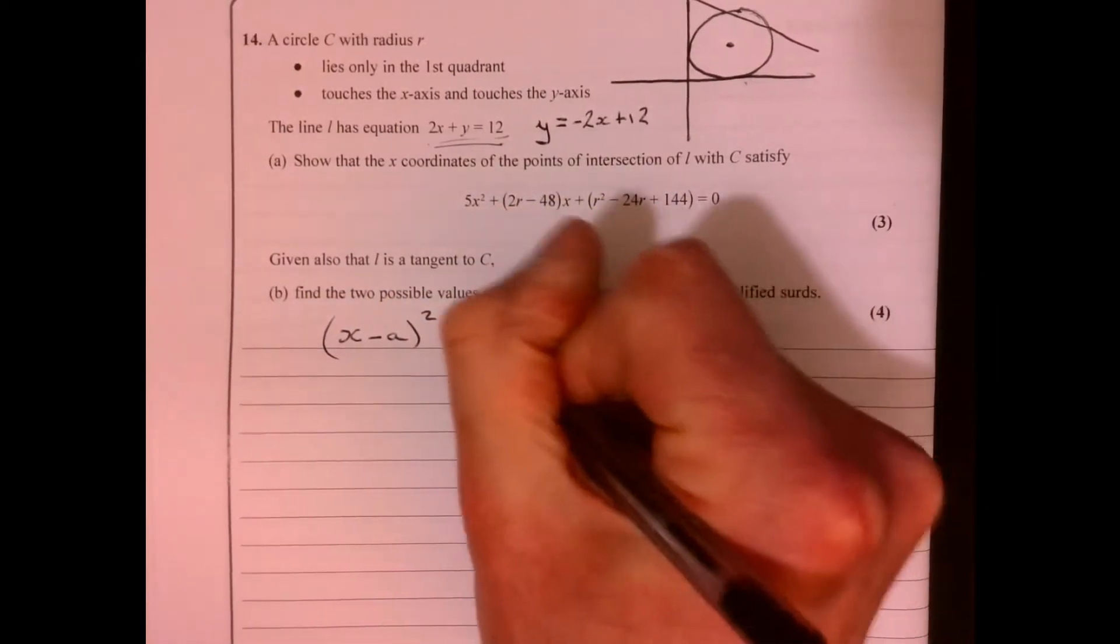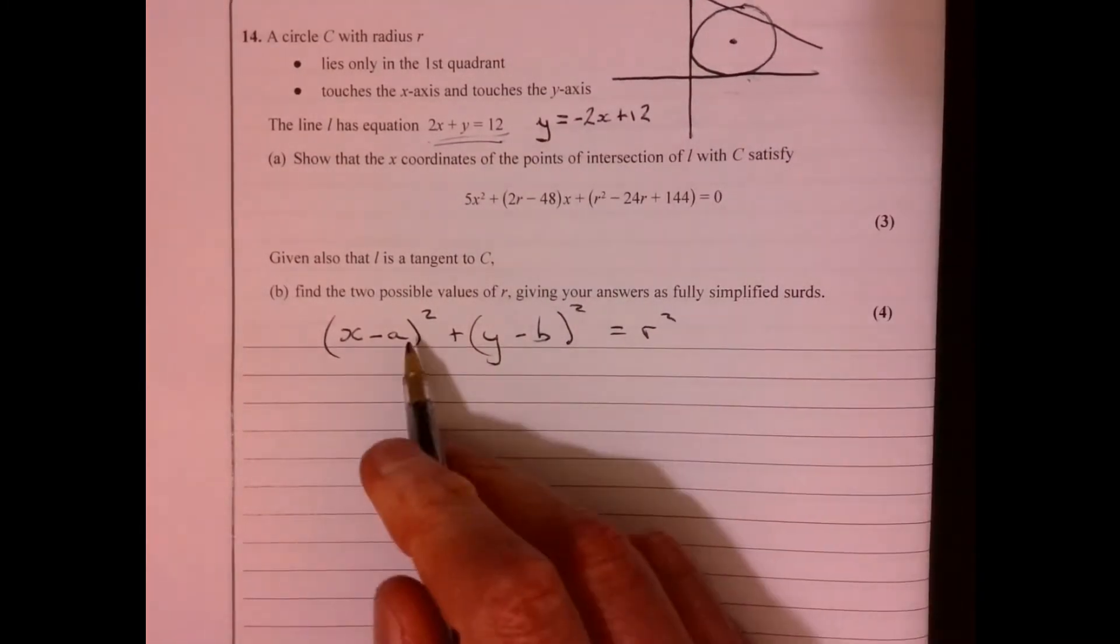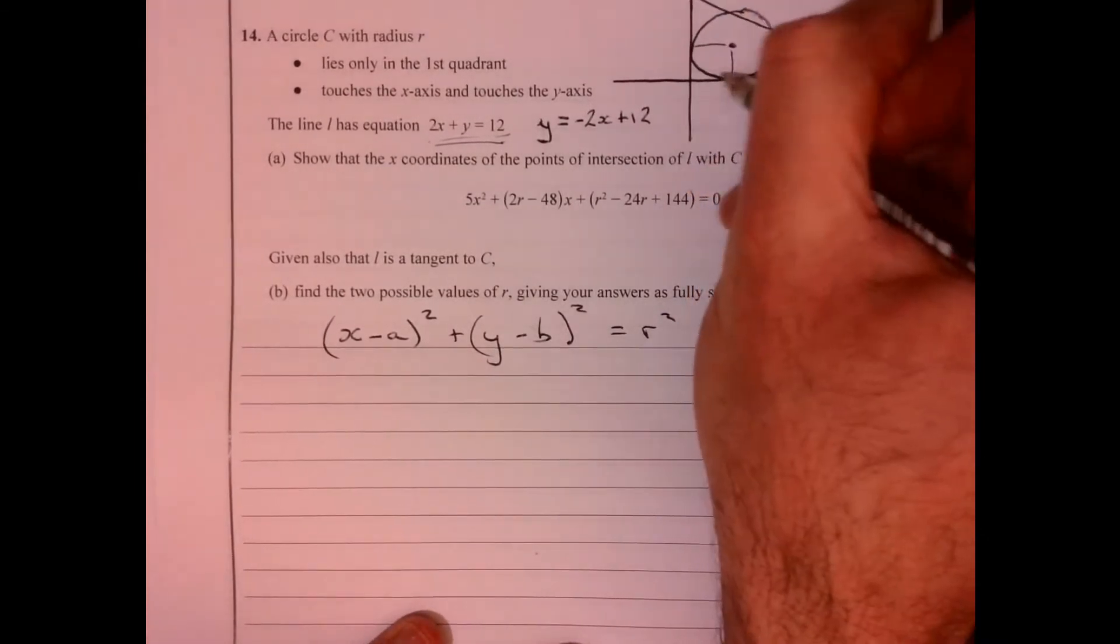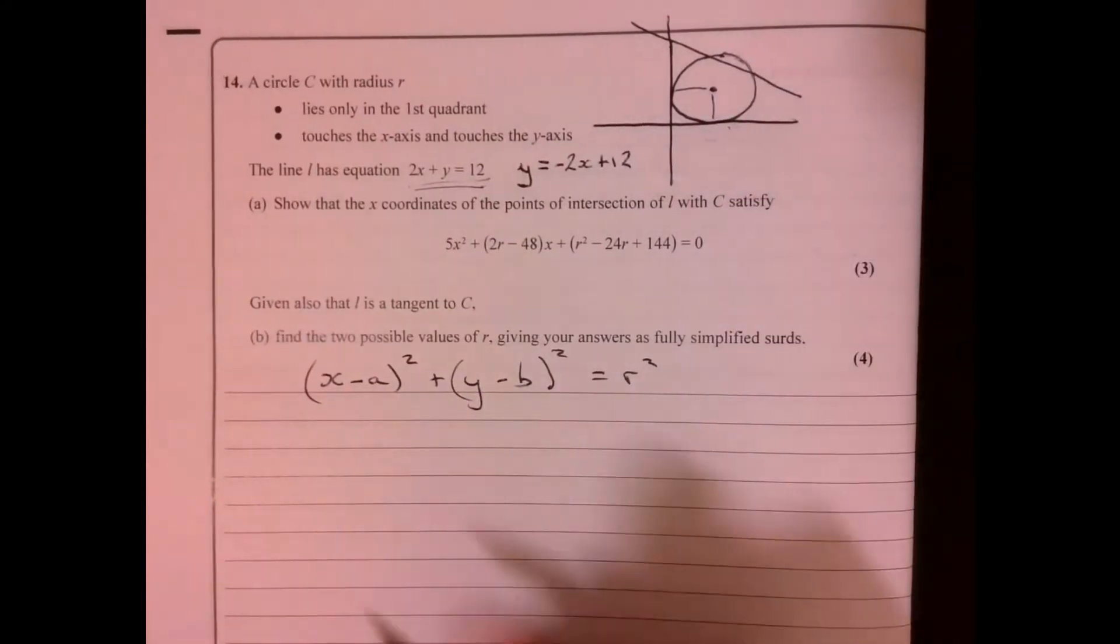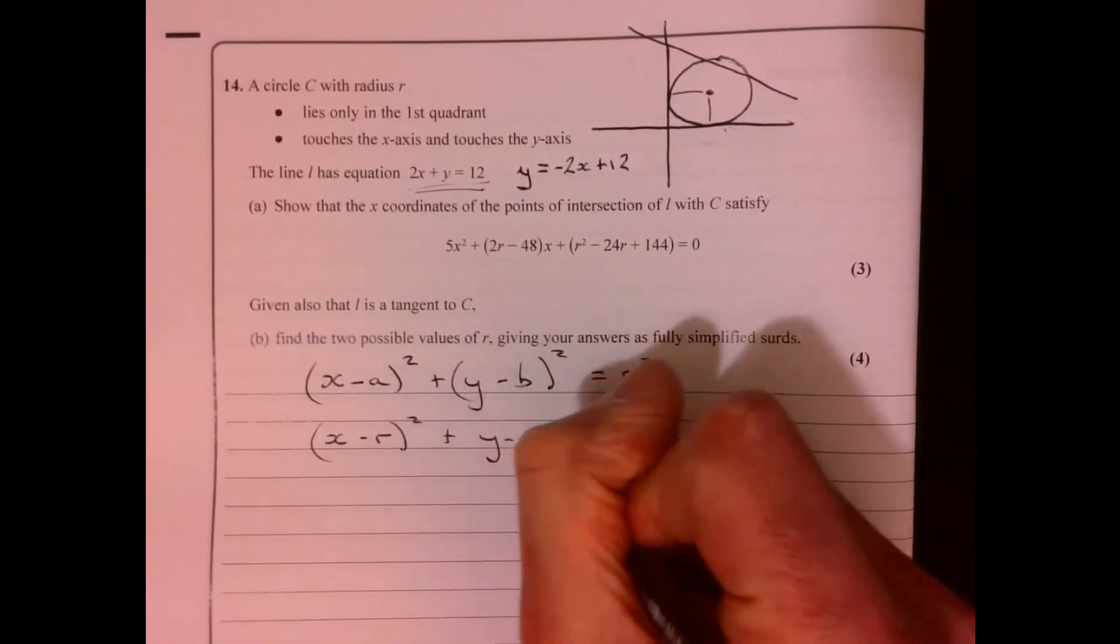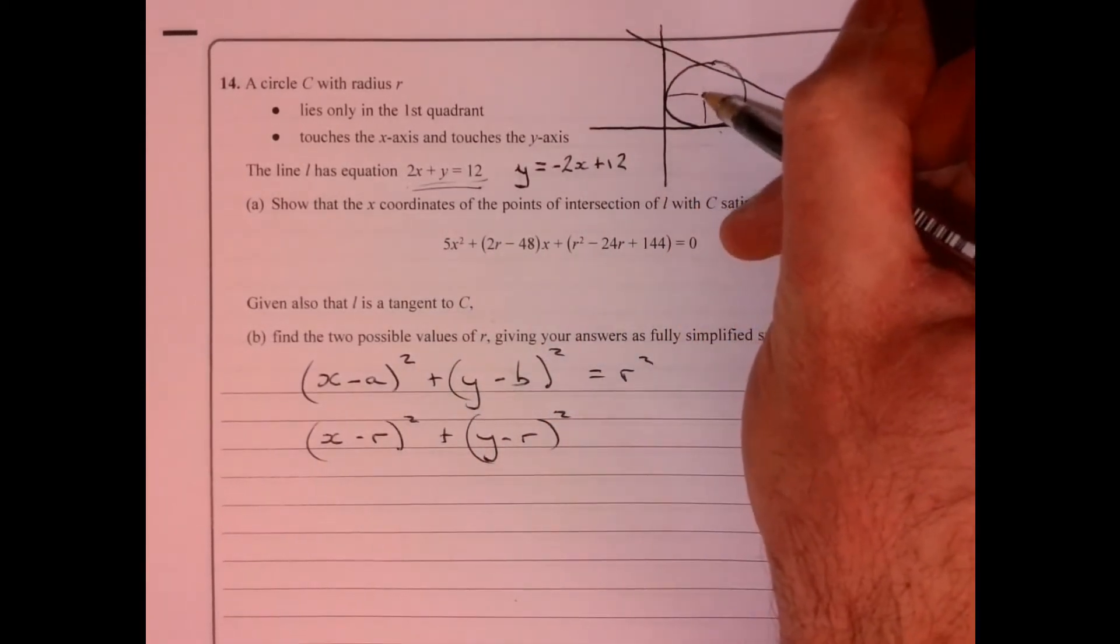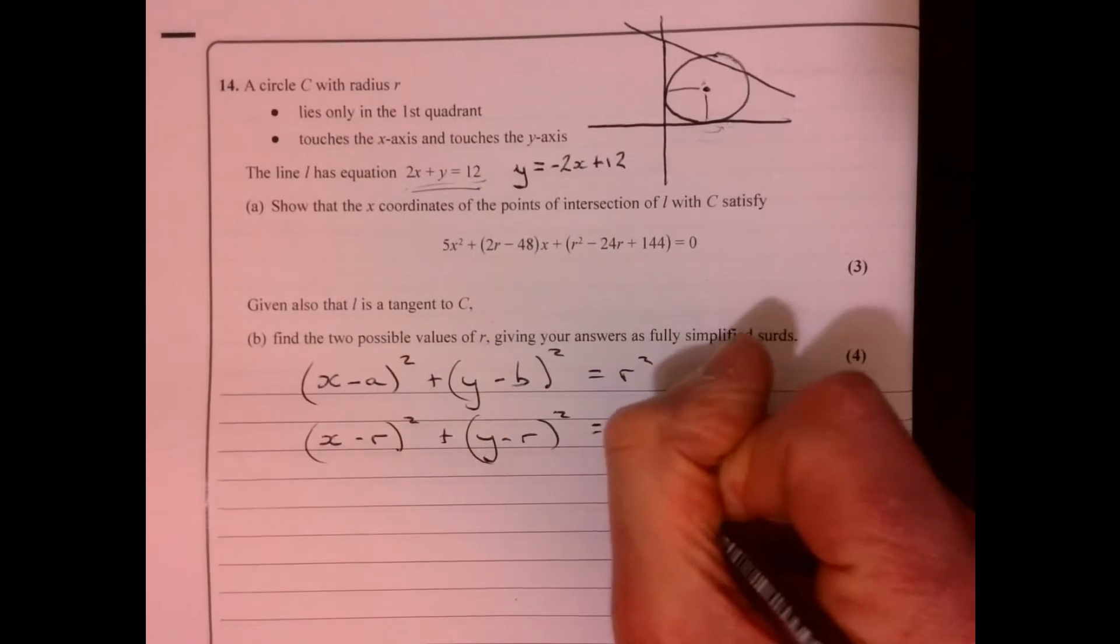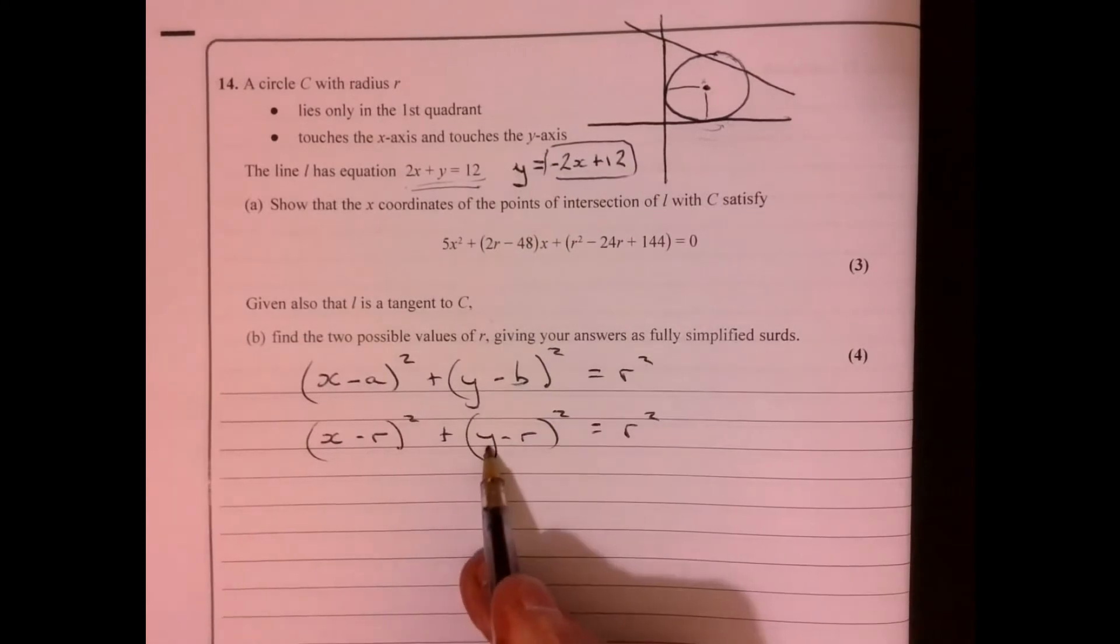(x - a)² + (y - b)² = r² where a and b are the center of the circle. Now on this occasion, the coordinates of a and b, that would have to be the radius, wouldn't it? So it's actually going to look like this: (x - r)² + (y - r)². Think about this point - the coordinate of that point must be the radius across and the radius up. It's got to be the case, so it equals r².